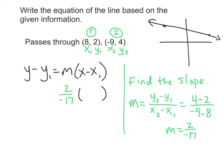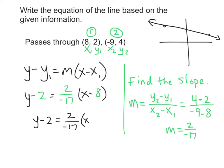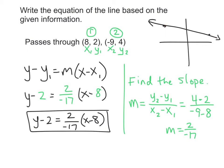Now we put the slope of 2 over negative 17 in for m. Then we fill in our x1 and y1 values — x1 is 8 and y1 is 2. So our final equation is y minus 2 equals 2 over negative 17 times x minus 8. This is the equation of the line through those two points. Our slope is negative — down 2, right 17 — and a point on the line is (8, 2).